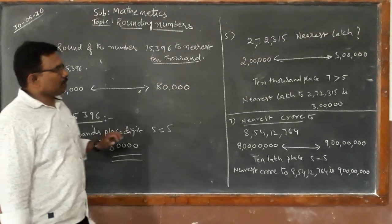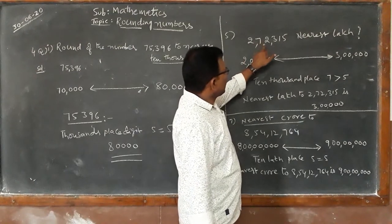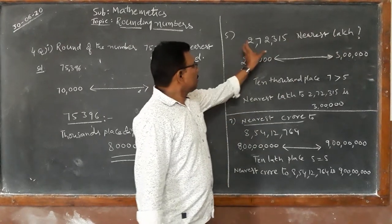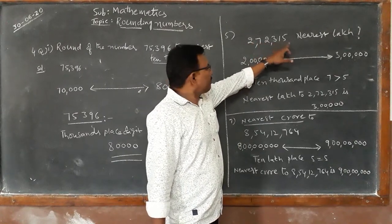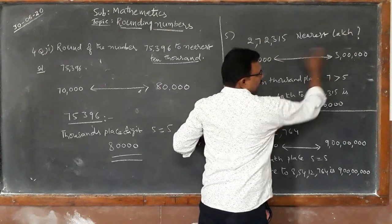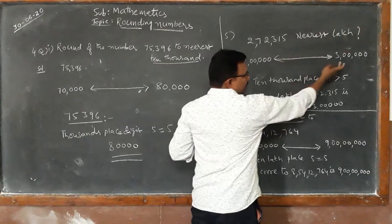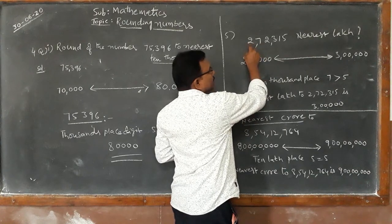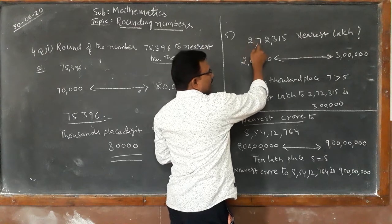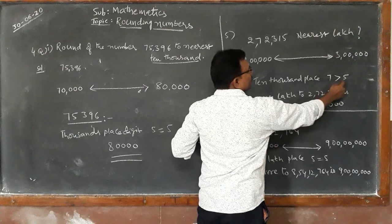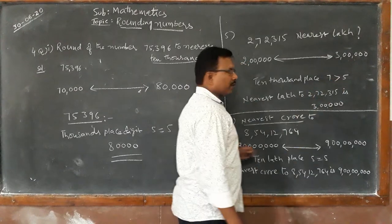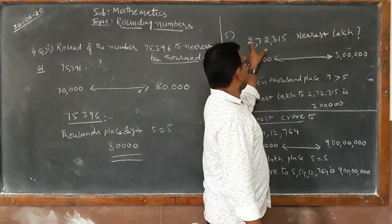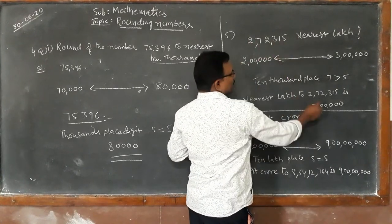Another example: round 2,72,315 to the nearest lakh. This number lies between two lakhs and three lakhs. To decide which it is nearest to, we check the next place after the lakhs place, which is the ten-thousands place. The ten-thousands digit is less than five, so we add one to the lakhs place, giving three lakhs with five zeros — so the answer is three lakhs.